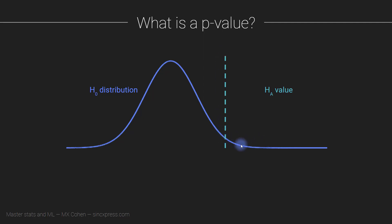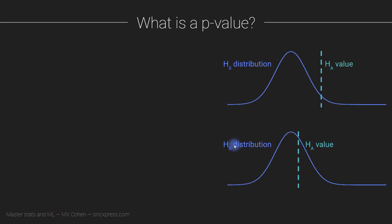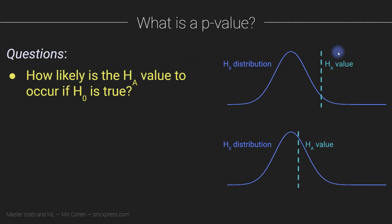So this is real data, and this distribution is a theory based on our assumptions. What we want to know is: what is the chance that we could have observed a value like this in the real data if the null hypothesis were actually true? Even if the null hypothesis were really true, we can still get values where it looks like people gained weight — that's just because of sampling variability. The question is how likely is the alternative hypothesis value to occur if the null hypothesis is really true?